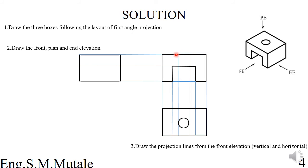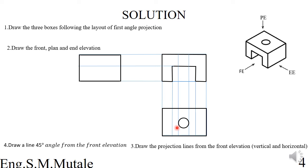The projection lines also come from the circular features on the object, which need to project into the corresponding views. Step four is to draw a 45-degree line from the corner of the front elevation. This 45-degree line is used to transfer dimensions between the plan and end elevation.